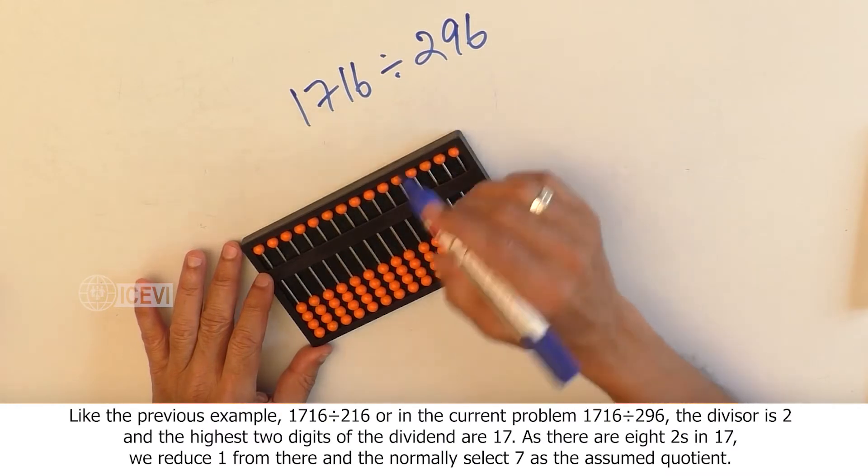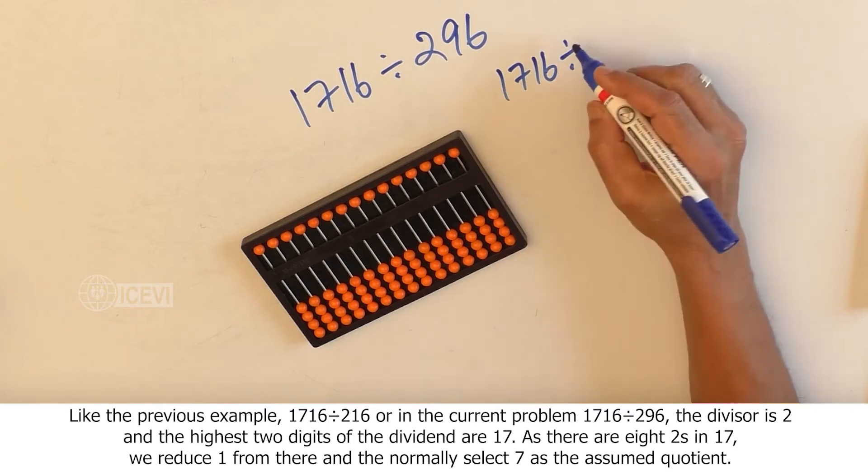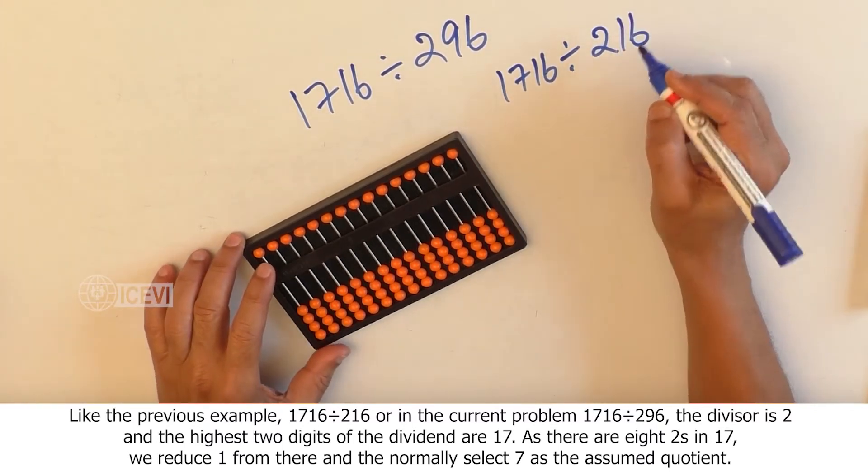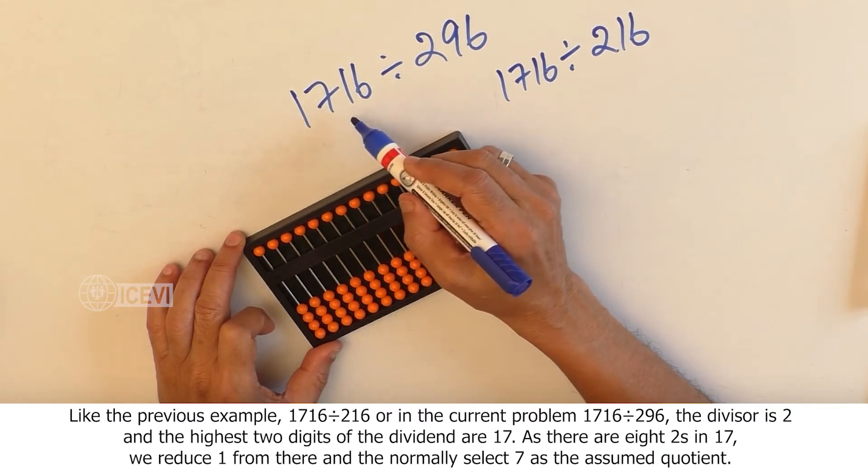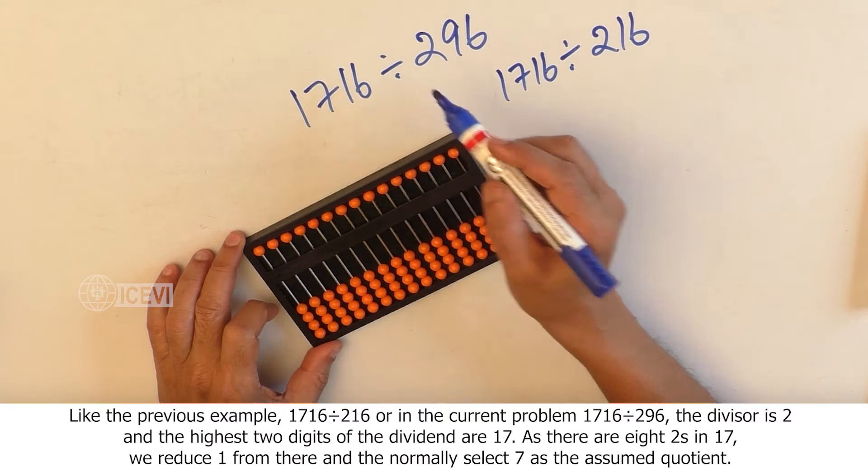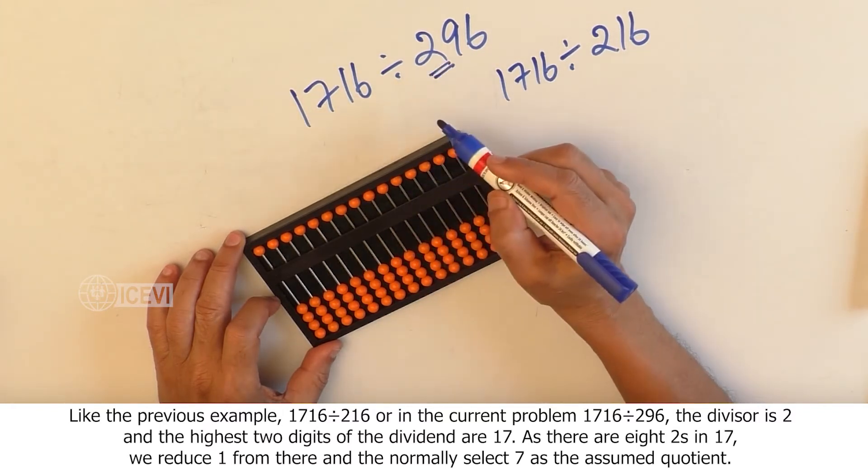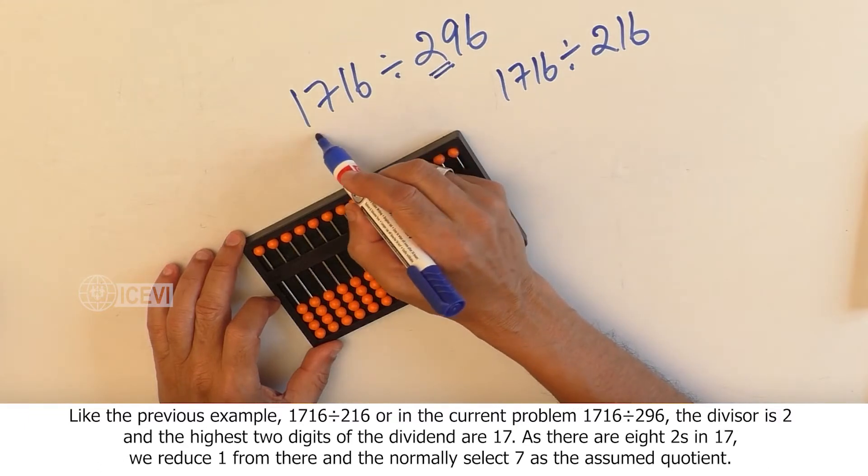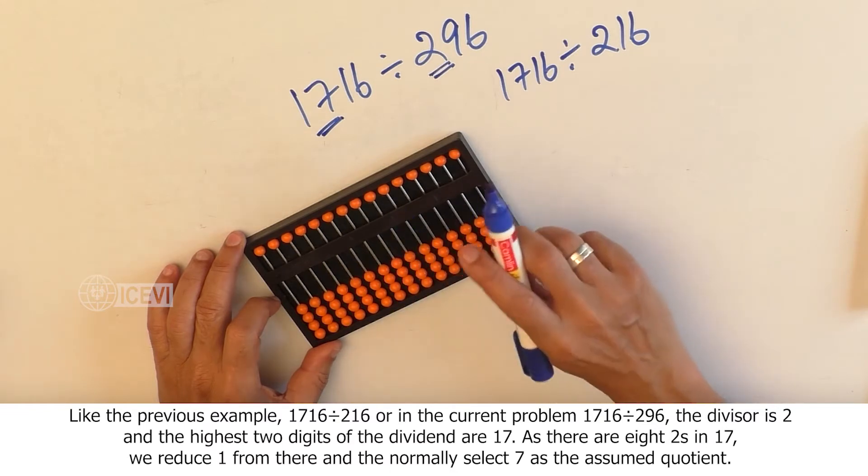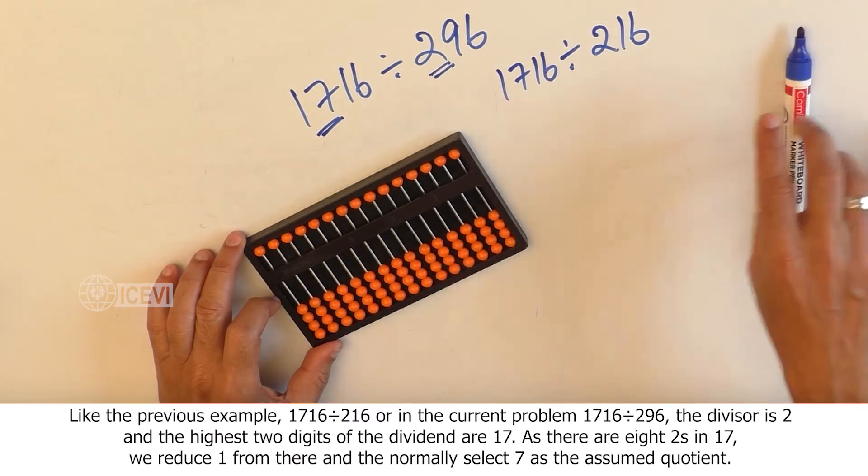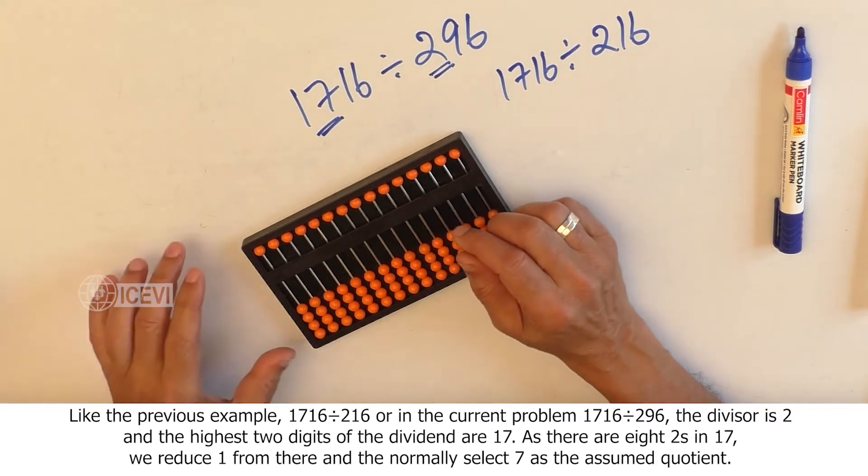Like the previous example, 1716 divided by 216, or in the current problem 1716 divided by 296, the divisor is 2 and the highest two digits of the dividend are 17. As there are eight 2's in 17, we reduce 1 from there and normally select 7 as the assumed quotient.